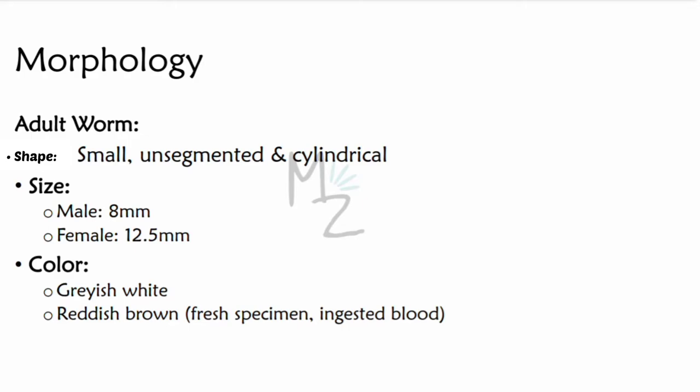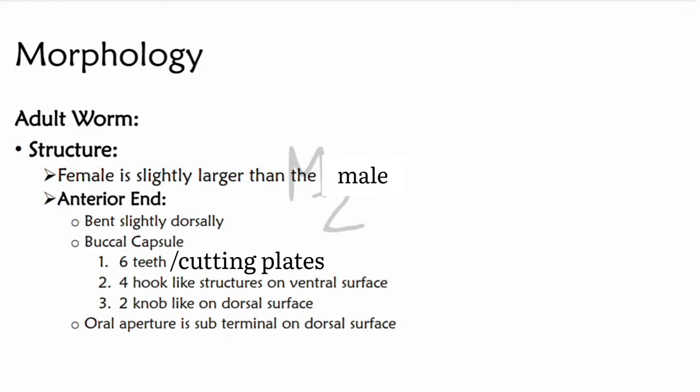Adult worm shape: it is small, unsegmented, and cylindrical. Size: male is 8 mm while the female is 12.5 mm, as the female is slightly larger than the male. Color: it is grayish white but appears reddish brown when obtained freshly from a sample, due to ingestion of blood. Anterior end: it is bent slightly dorsally, giving it a hook shape — that is why these are termed hookworms. They have a buccal capsule with six teeth, four hook-like structures on the ventral surface, and two knob-like structures on the dorsal surface. For Ankylostoma, it has teeth on its head; for Necator, it has cutting plates. The oral aperture is subterminal on the dorsal surface.